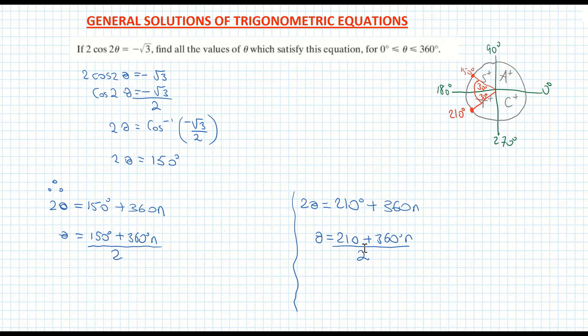I get 75 degrees plus 180 degrees n. So that's theta. And on my right hand side, my second solution is 105 degrees plus 180 degrees times n.